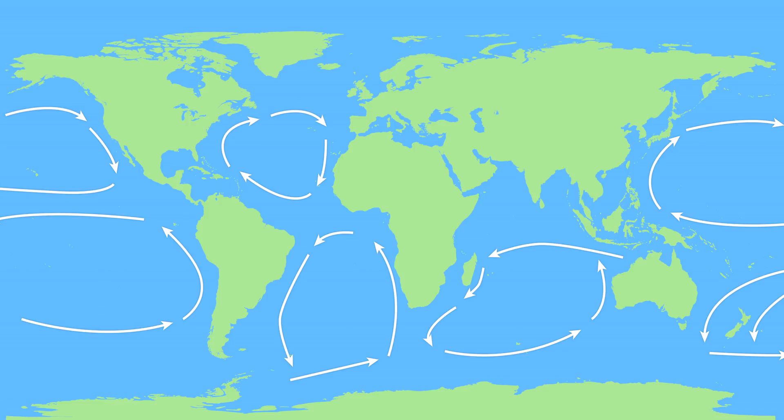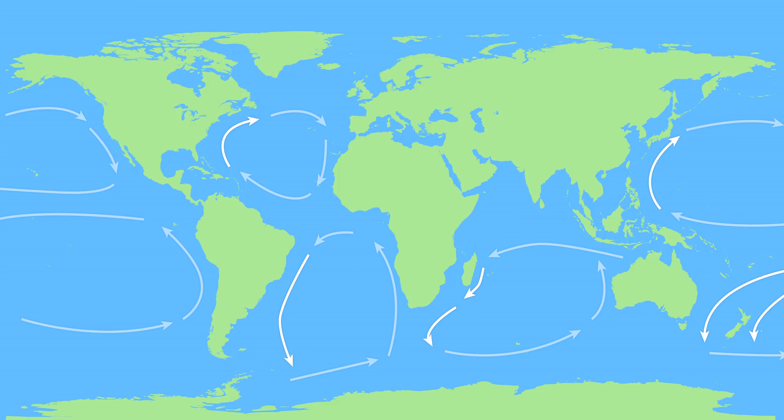The currents within these gyres are not symmetrical. This is because the rotation of the Earth results in the rotational center of the gyre being shifted to the west of the geographical center. This causes a process called western intensification. This is where the boundary currents on the western side of the gyre are intensified, becoming fast, narrow, and deep. Western intensification also causes the eastern boundary currents to have the opposite characteristics, where they are slow, wide, and shallow.